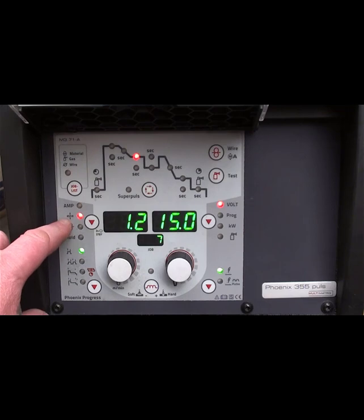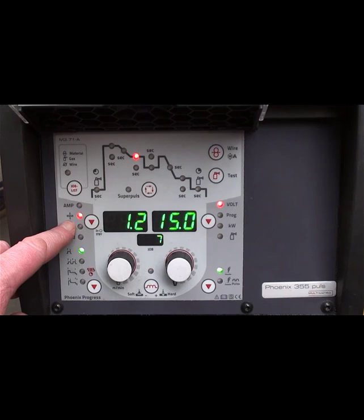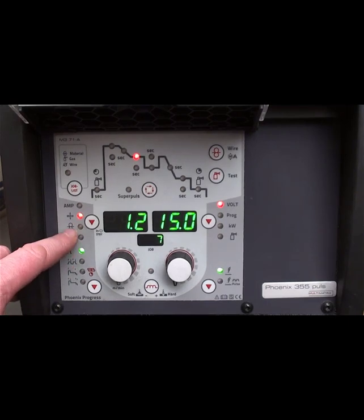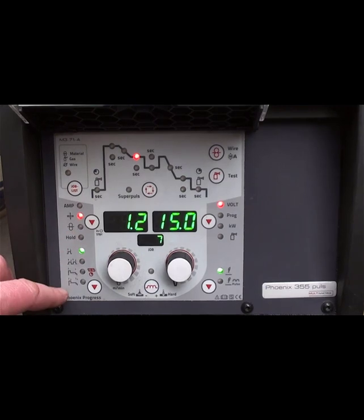And this next symbol, in this next frame down here we've got amperage. We've got material thickness. We've got a piece of plate with an arrow pointing to it from either side. That is the material thickness. The next symbol is a line with two wheels on the outside of it. That's your wire speed.